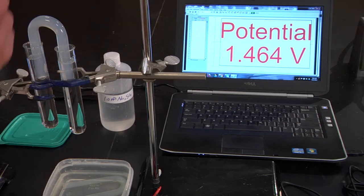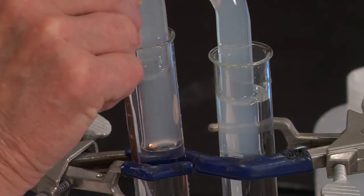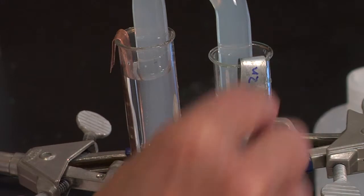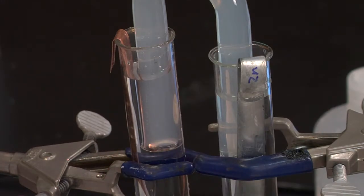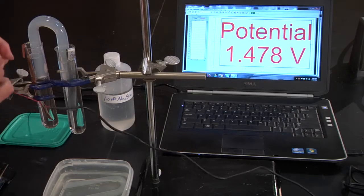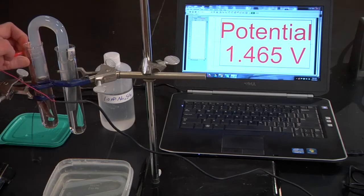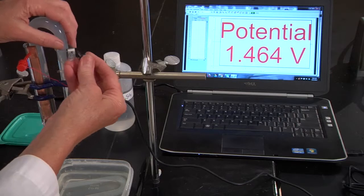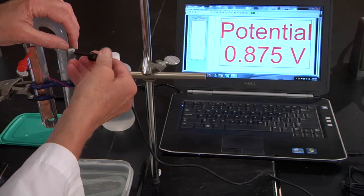And then from there, we're going to add our copper electrode and our zinc electrode, and we're going to connect our circuit. So let's see what the voltmeter has to say.